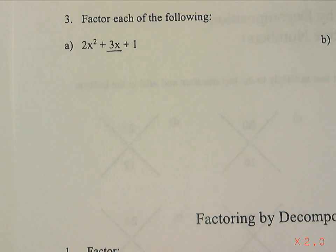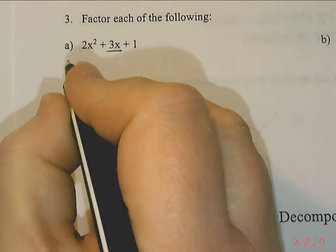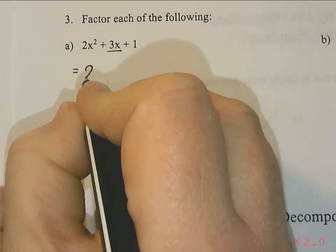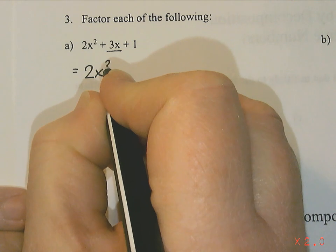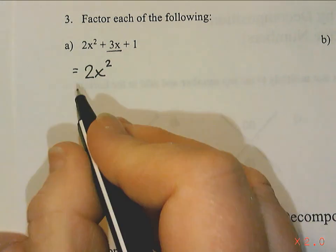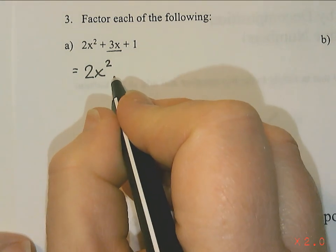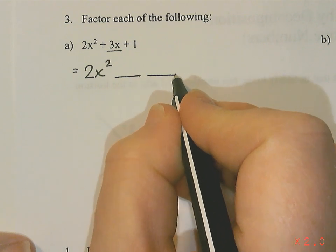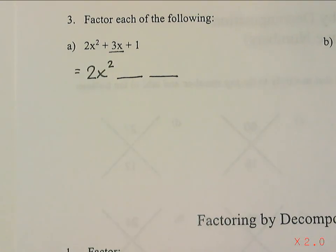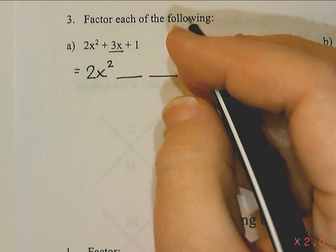We start by looking at that middle term and we try to figure out what did we add together, what were the like terms that we put together to get that 3x. So I'm going to start by expanding my expression to four terms. I have 2x² and then I'm going to have two middle terms that I collected to get 3x. I don't know what those are yet, and then I still have a +1.